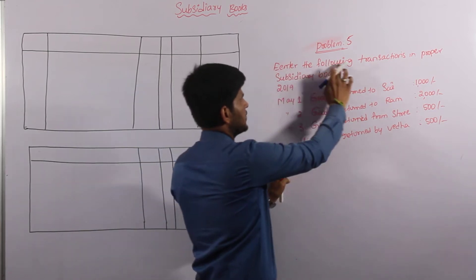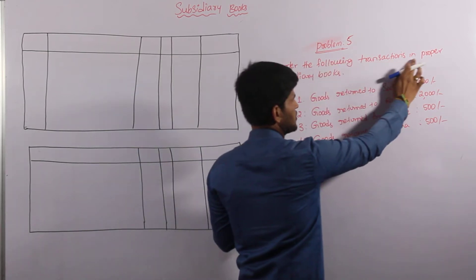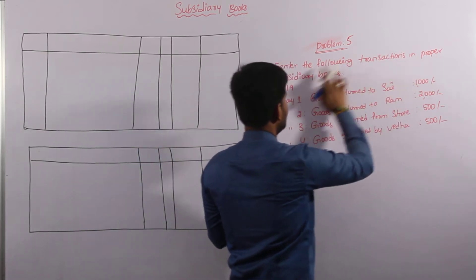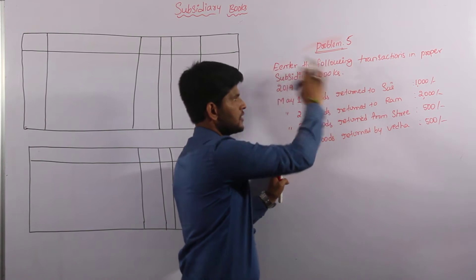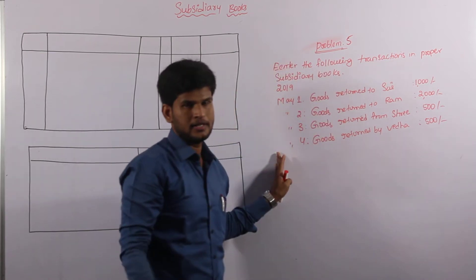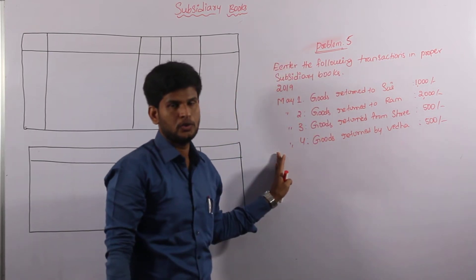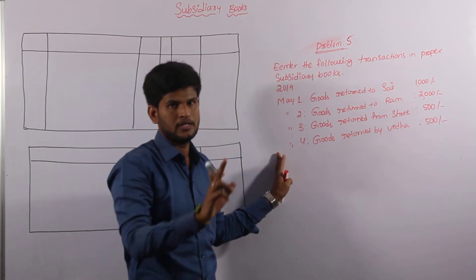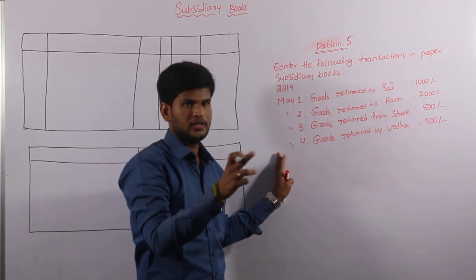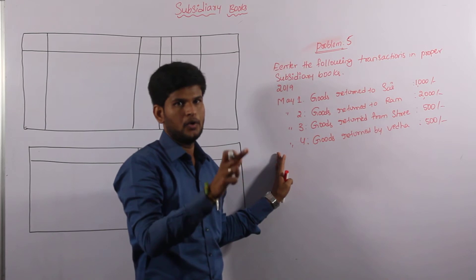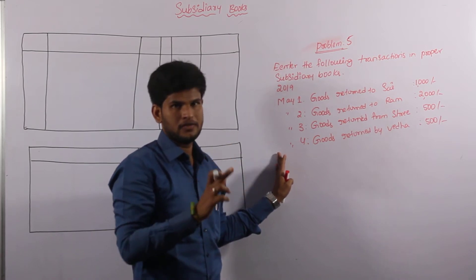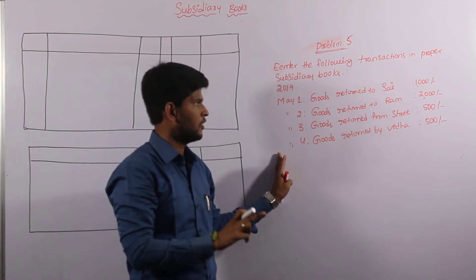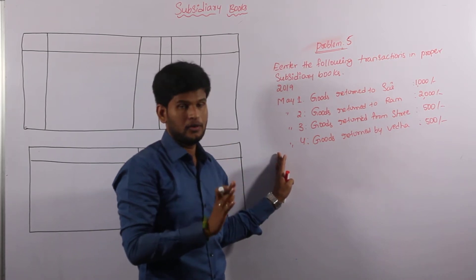I am reading the problem again: Enter the following transactions in proper subsidiary books. The examiner has not mentioned a particular subsidiary book, so that is the reason we have to identify which of the eight types of subsidiary books are applicable.